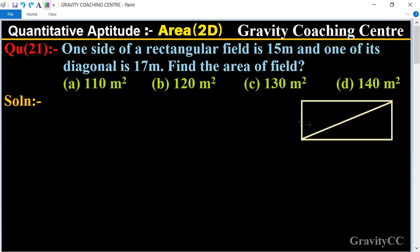In this question, one side of the rectangular field is given as 15. First of all, let the length be 15 meters and the breadth be y. The diagonal is given as 17 meters.